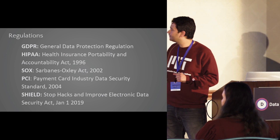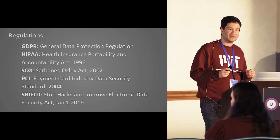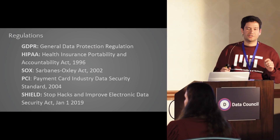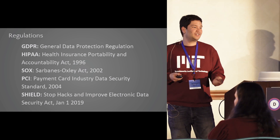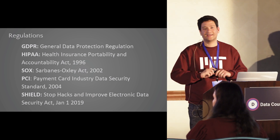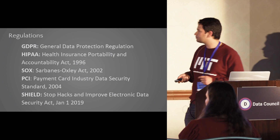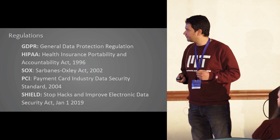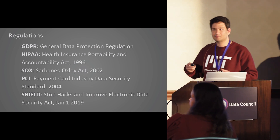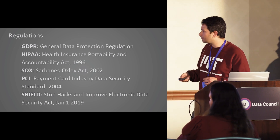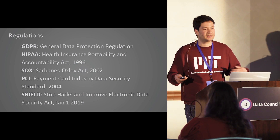Regulations are moving very fast in the privacy space. In general, technology moves much faster than regulation, but when you see regulation is moving very fast, you know technology is outpacing it very quickly. There are laws across the board — GDPR, HIPAA, and California recently introduced its own privacy law at the state level. So regulations are a nice indicator of trends in the technology space.